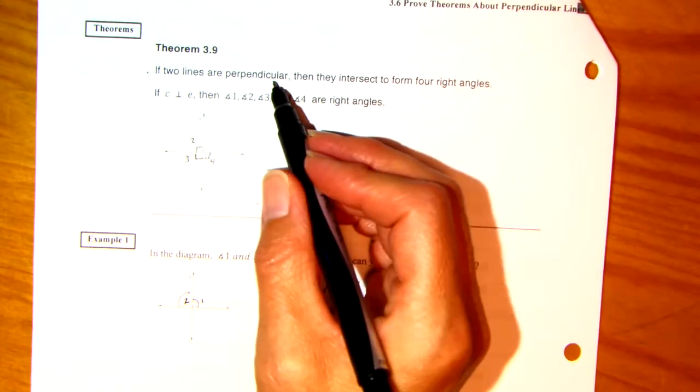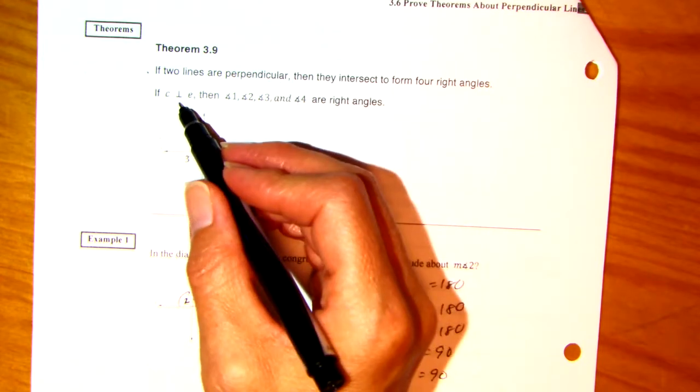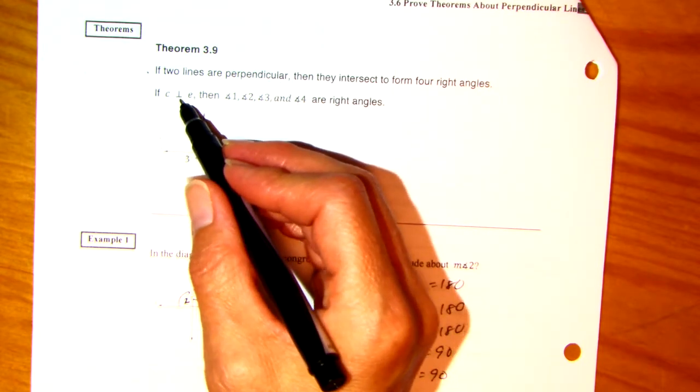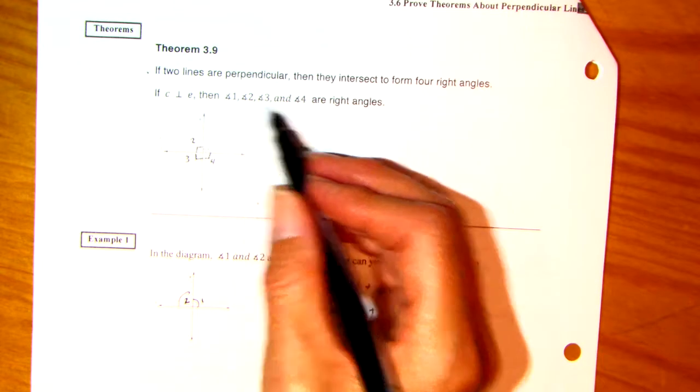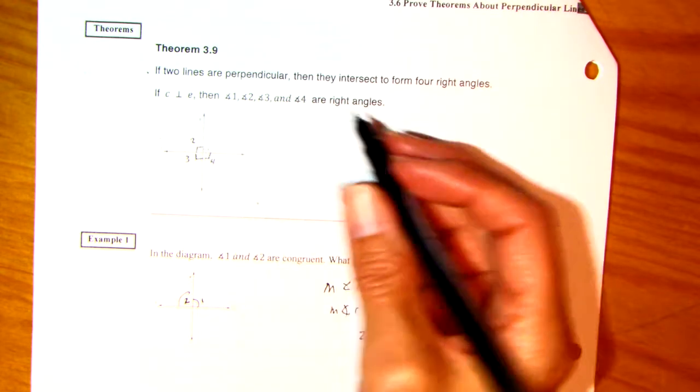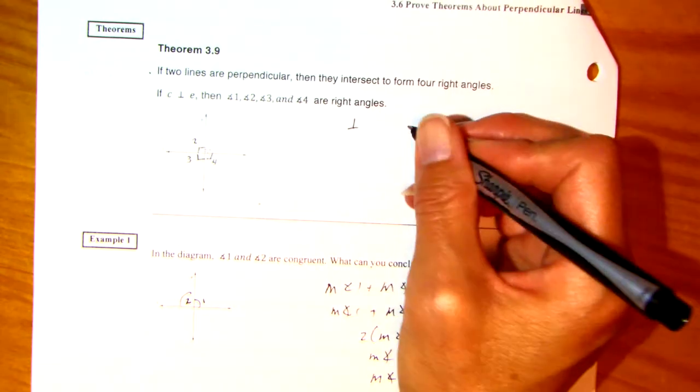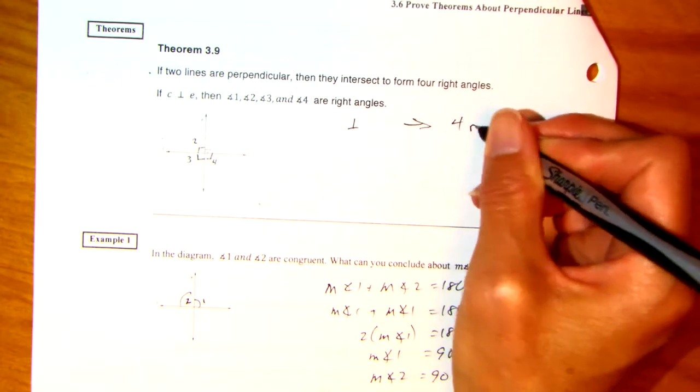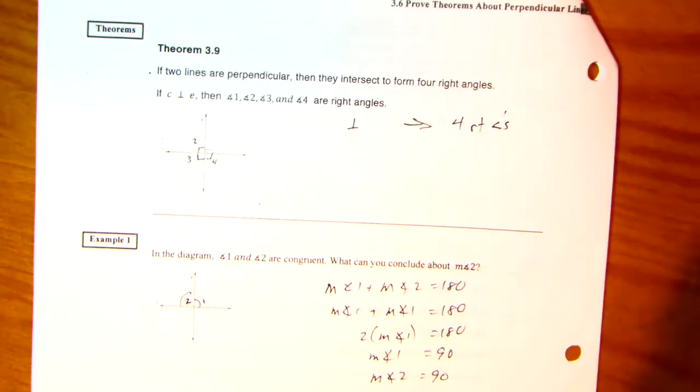So here we go. If two lines are perpendicular, so now we're starting with this. Okay? So if C is perpendicular to E, then all four angles are right angles. So we're starting with perpendicular lines and then we go to four right angles. Okay?